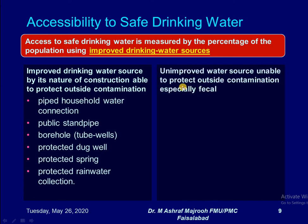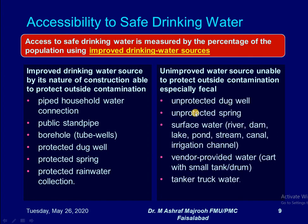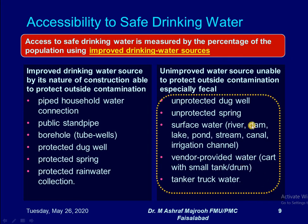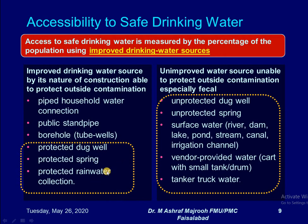Unimproved water sources are unable to protect against outside contamination, especially fecal contamination. These include unprotected dug wells, unprotected springs, surface water such as rivers, dams, lakes, ponds, streams, canals, and irrigation channels. Vendor-provided water through carts and small tanks and drums are also unprotected, as is tank truck water. It should be noted that dug wells, springs, and rain water collection that are not protected will also be treated as unsafe.